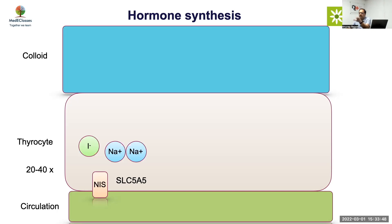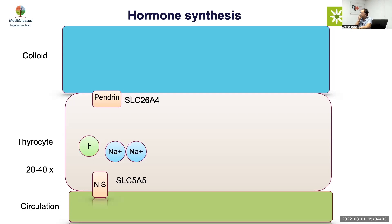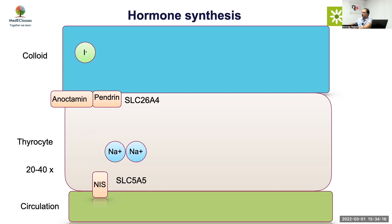Once iodine arrives in the cell, it cannot stay there — it has to be pushed out to the colloid. There are multiple ion exchangers that play a role here. One of them is pendrin, and another is an anoctamin — there is some controversy — but pendrin is well established. Pendrin pushes the iodine out to the colloid area.